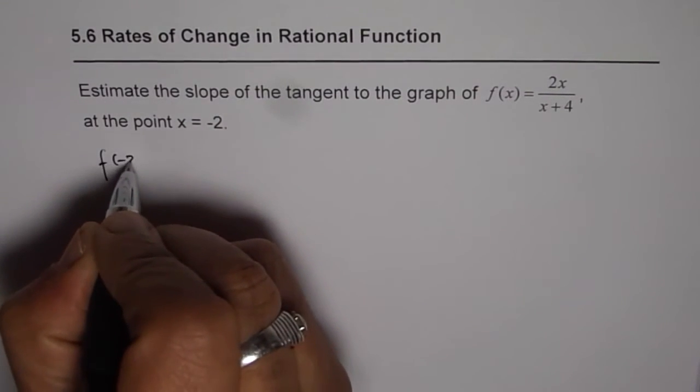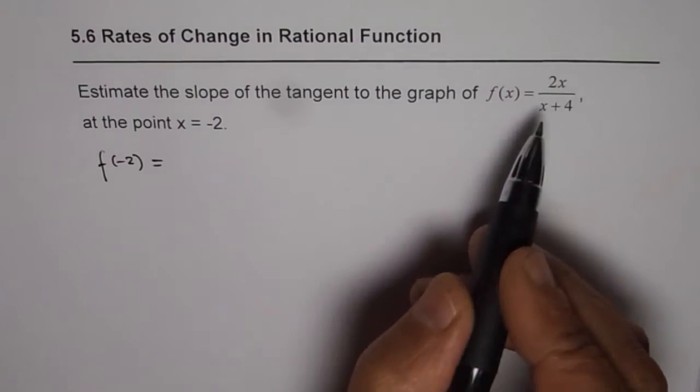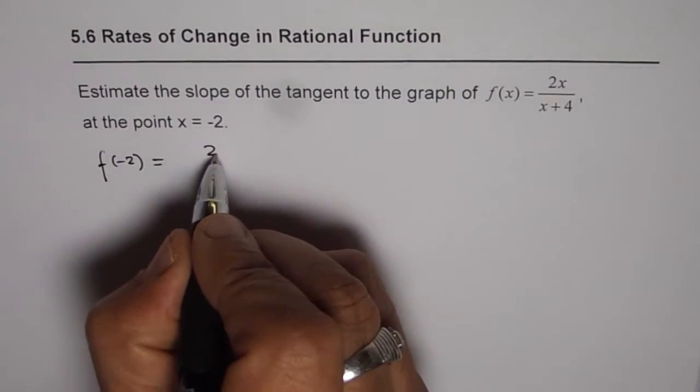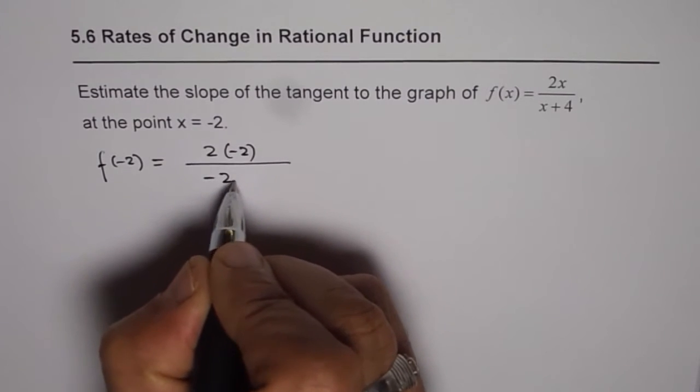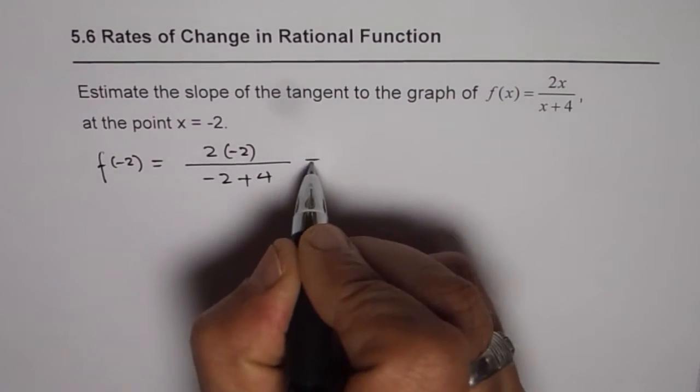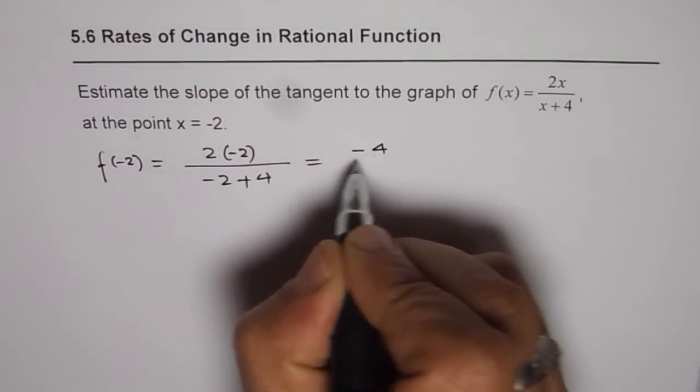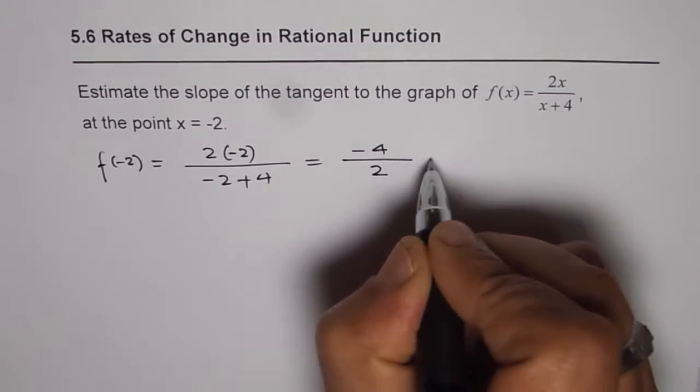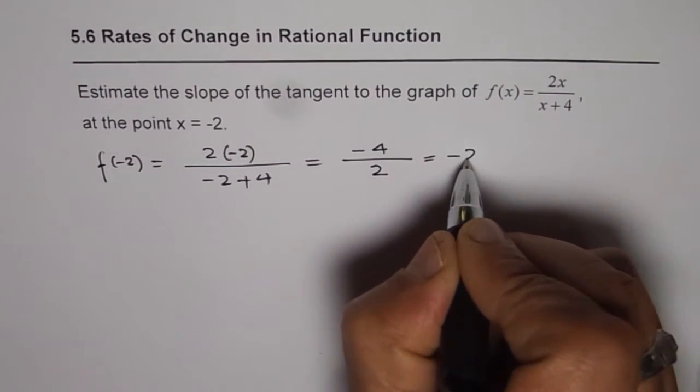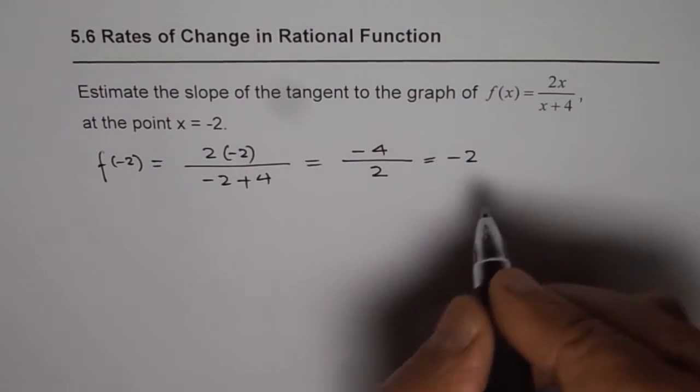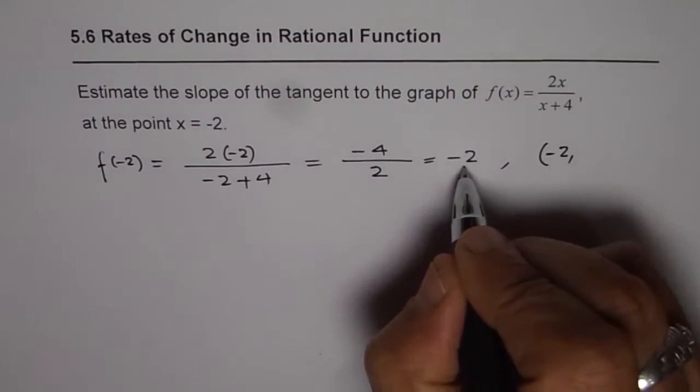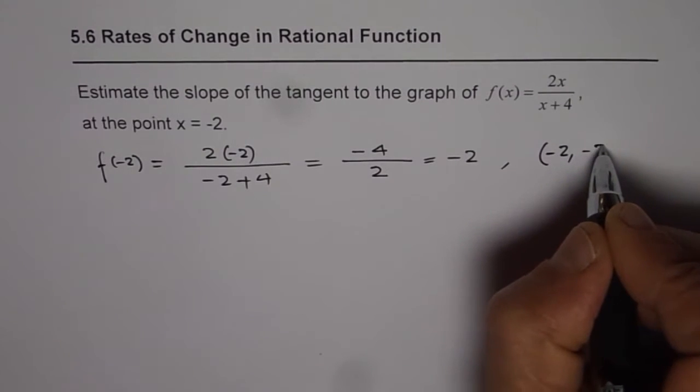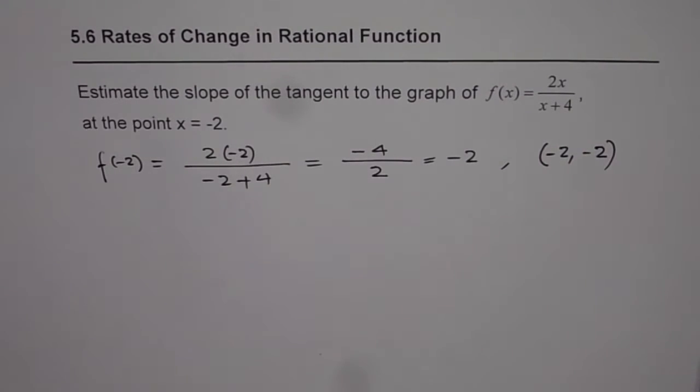So f(-2) equals, we replace x with -2. So we will get 2(-2)/(-2+4). That gives us -4/2 or -2. Therefore, we are considering the point which is -2 for x value and the y value is also -2. So this is the point under consideration.